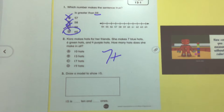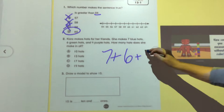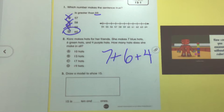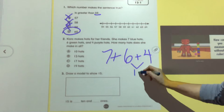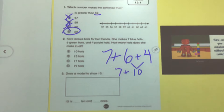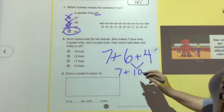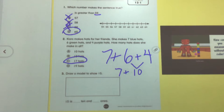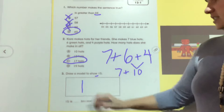Kara makes hats for her friends. She makes seven blue hats, plus six green hats, plus four purple hats. How many hats does she make in all? I look at these and see that six plus four equals 10, so now it reads seven plus 10. Seven plus 10 gives us 17. The last one: draw a model to show 15. When we draw a model, we draw our tens and ones — 15 is one ten and five ones.